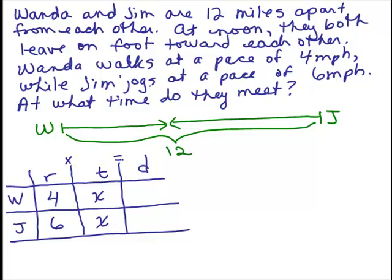So rate times time equals distance tells you that Wanda's distance is 4 times X. And Jim's is 6 times X. So the chart's not too hard to fill out.